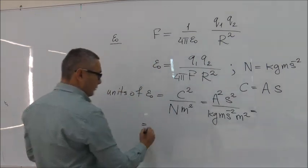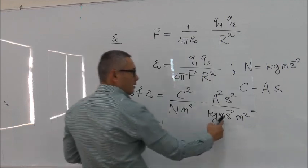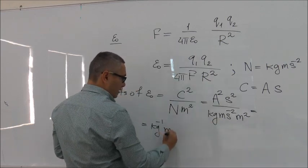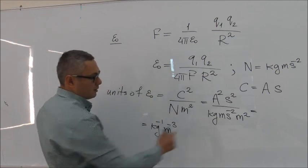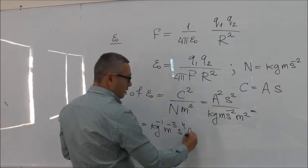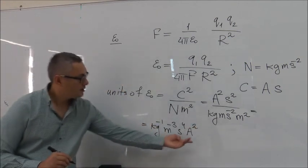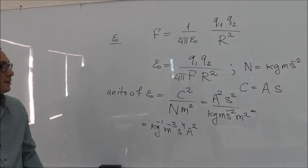So we finally get kilogram inverse meter cubed inverse second to the fourth and ampere squared. So these are the base units of the epsilon zero.